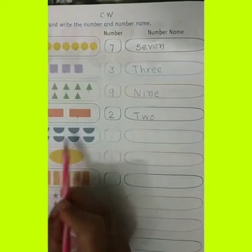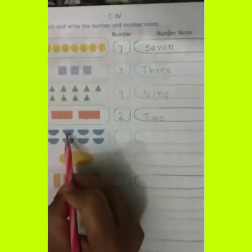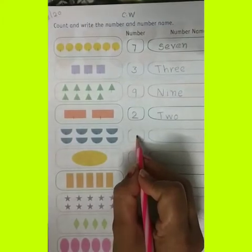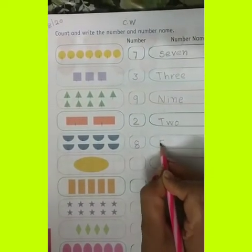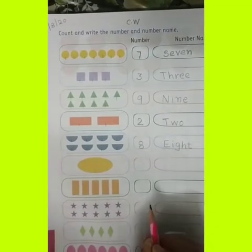Which picture is this? These are half round — half circle. Let's count: 1, 2, 3, 4, 5, 6, 7, 8. How many half circles? 8. So you can write down here number 8. Write down the spelling of number 8: E, I, G, H, T — 8.